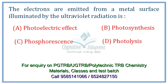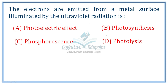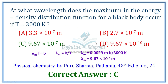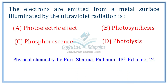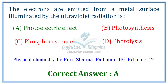Next question: Electrons are emitted from a metal surface when illuminated by ultraviolet radiation. This is a direct definition question. When electromagnetic radiation falls on a metal surface, it emits electrons — this is called the photoelectric effect. Correct answer: A.